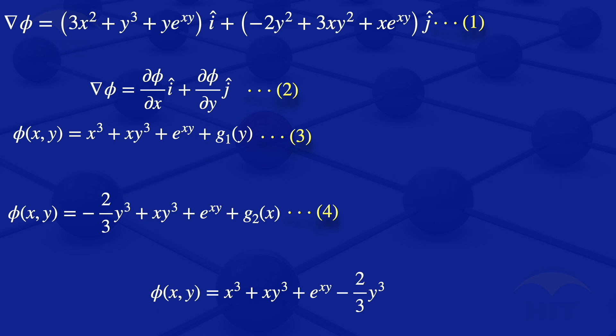Looking at g₂(x), which is a function of x only: that corresponds to the x³ term in equation 3. Substituting x³ for g₂ gives the same result, confirming that φ(x, y) equals x³ + xy³ + e^(xy) − (2/3)y³.